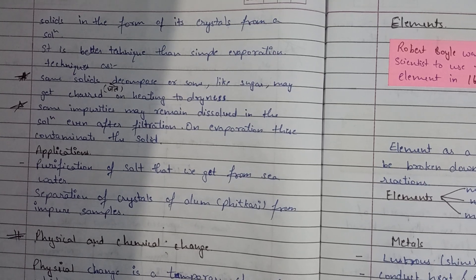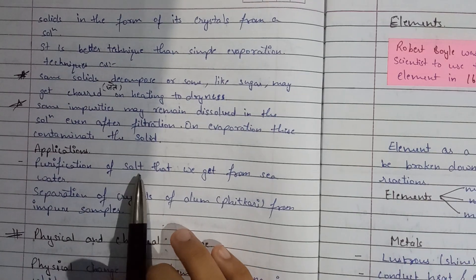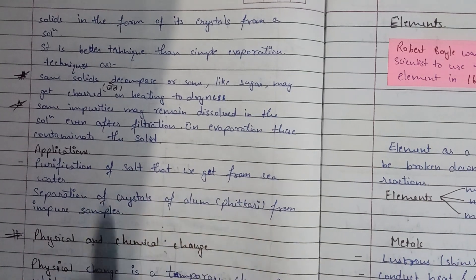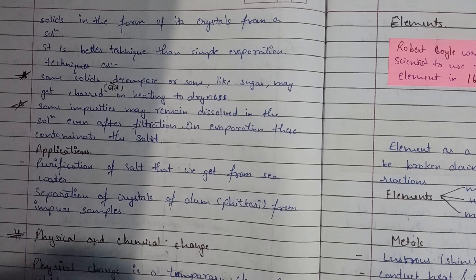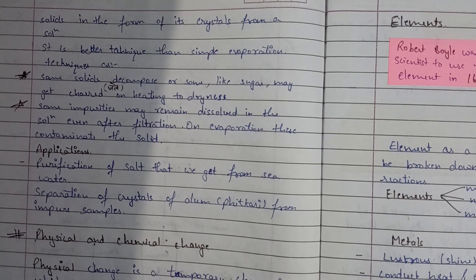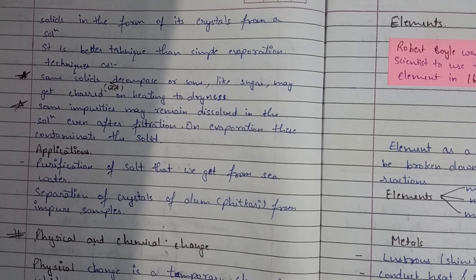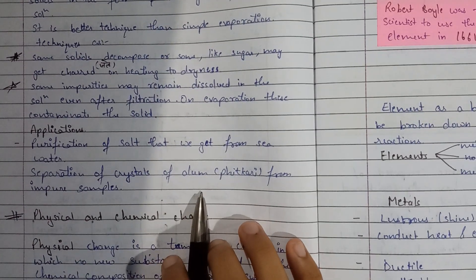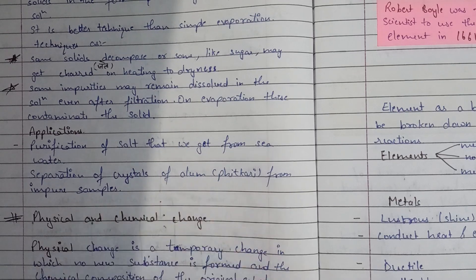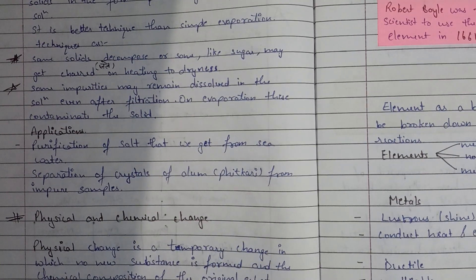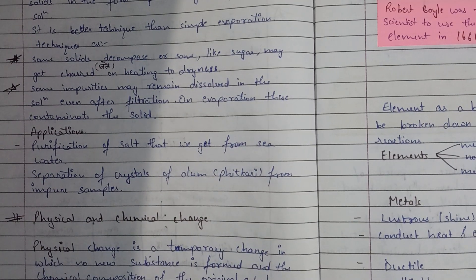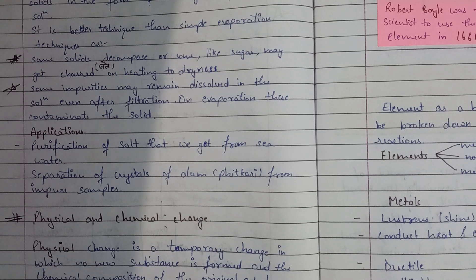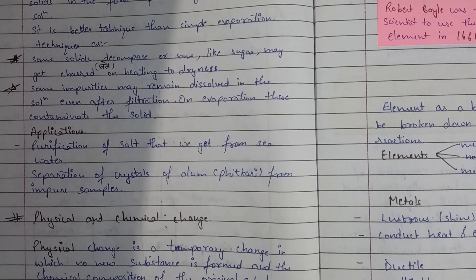Applications of crystallization include purification of salt obtained from sea water, and separation of crystals of alum from impure samples. There are many impure samples containing alum with impurities, and we use crystallization to separate the pure alum crystals from those samples.